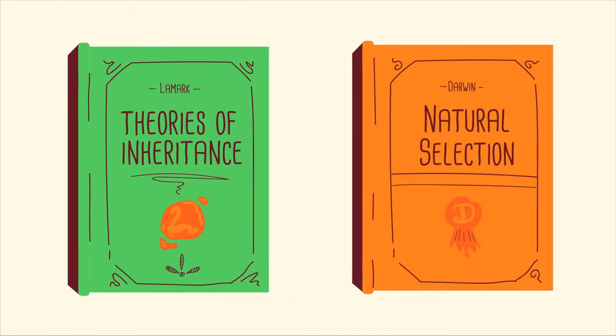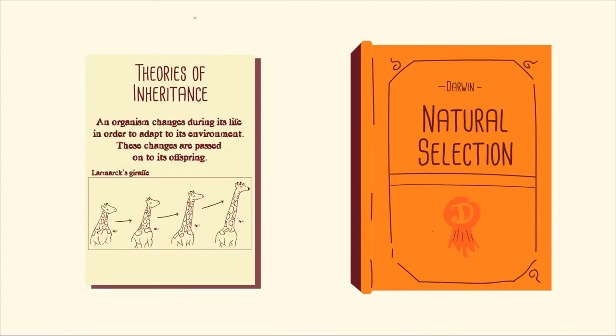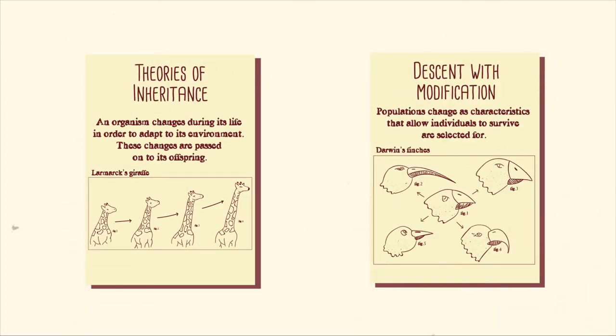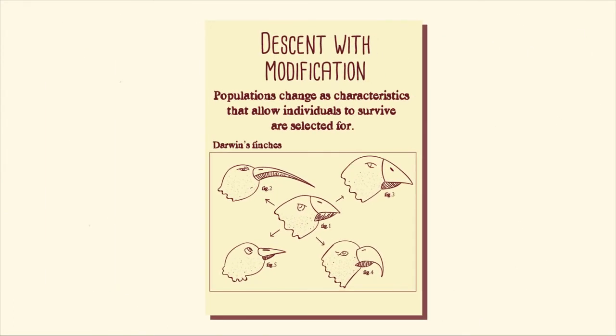What he found on his voyage, however, did not seem to fit with Lamarck's ideas. Instead, Darwin developed his own idea of descent with modification. The key difference here is that in Darwin's idea, the traits of the parents were passed on without being modified by the life of the parent.